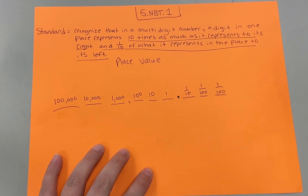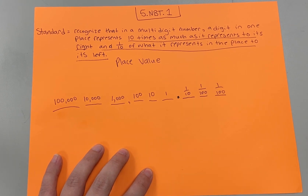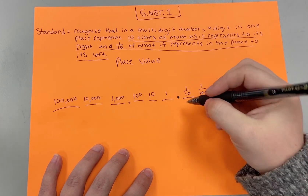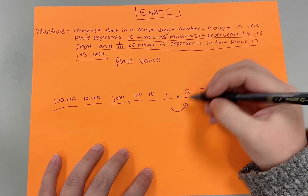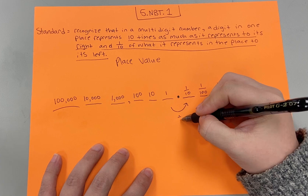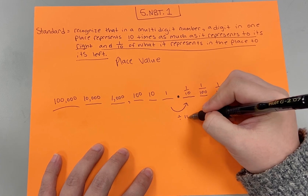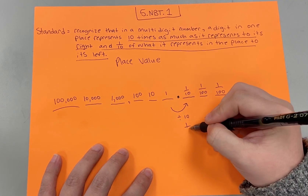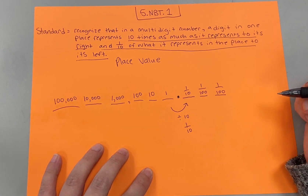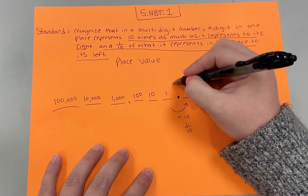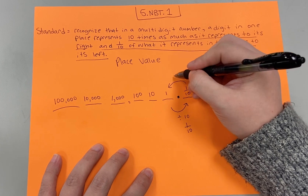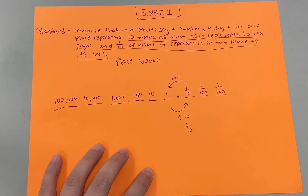For the standard, students need to understand that a digit to its right means you're dividing by 10, so that makes it one-tenth less. And a digit to its left is ten times bigger.